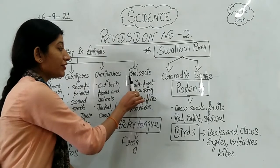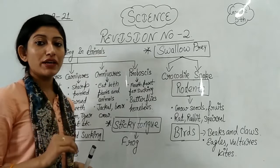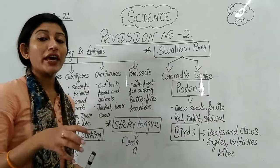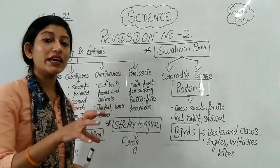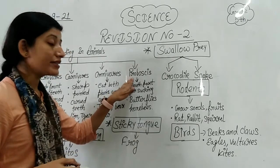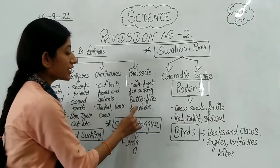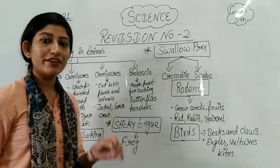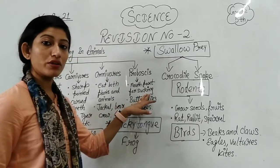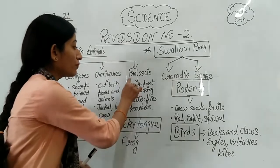Now I have written here proboscis. What is proboscis? Proboscis is a type of sucking way of taking food. This habit is used by some insects, like butterflies and honeybees. Insects like butterflies and honeybees have a mouth part for sucking, and the process is called proboscis.